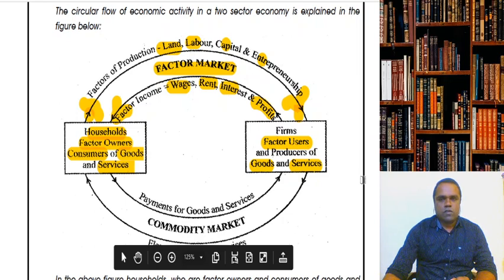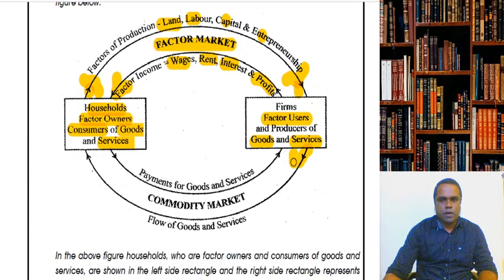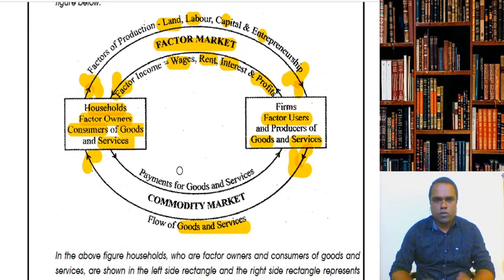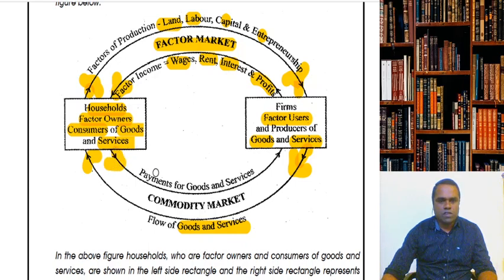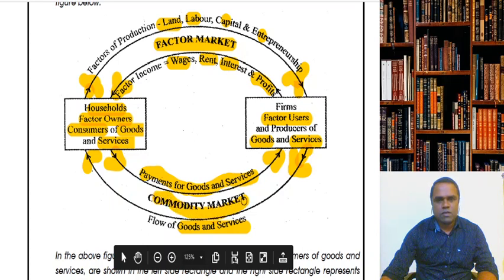When firms produce goods and services, these goods and services are sold by the firms to the households. So there is a flow of goods and services from firms to households. Households act as consumers — companies don't utilize those goods and services on their own; they sell to the households. In return, payment for goods and services flows from households to the firms. This market where goods and services are traded is termed the commodity market.